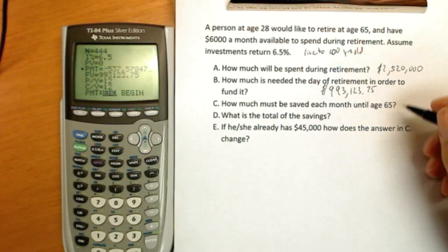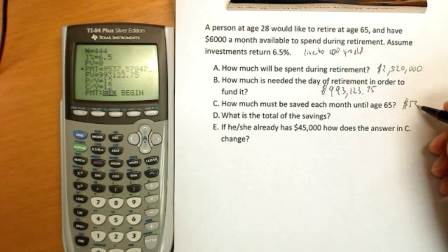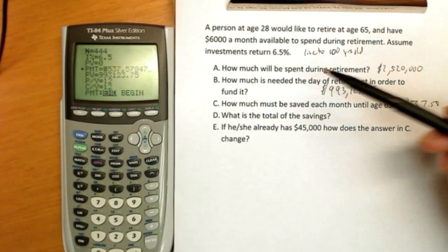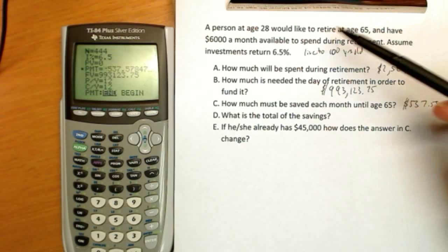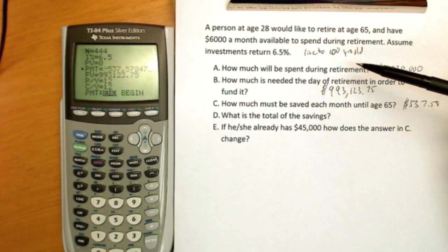And we have $537. Now that might seem a bit shocking. $537.58 a month during your working years from 28 to 65 is sufficient to pay yourself $6,000 a month during those 35 years of retirement.